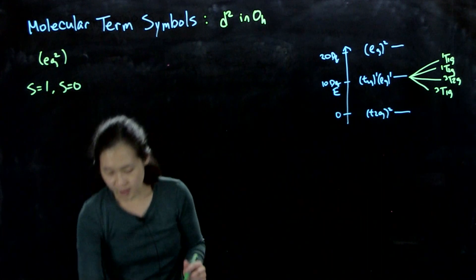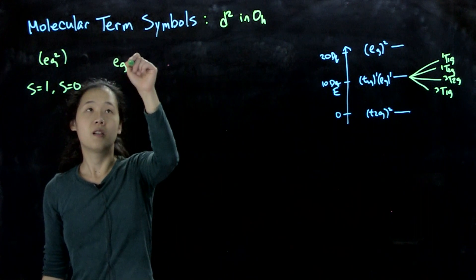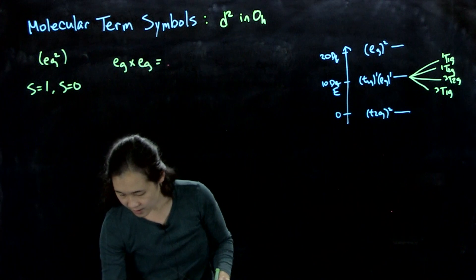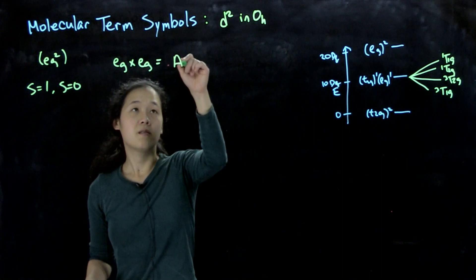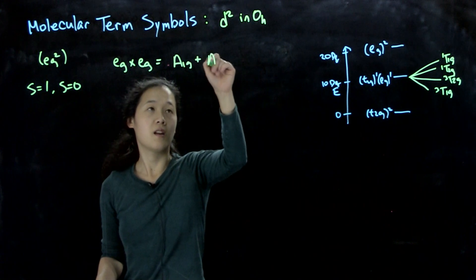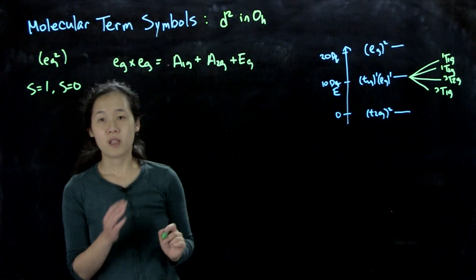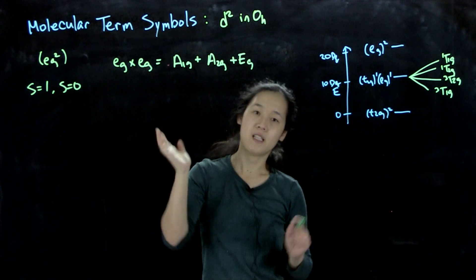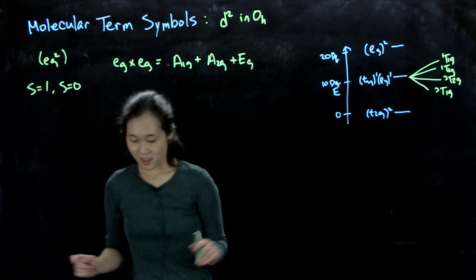To find the orbital symmetries, we again should do the direct products. So we know that eg times eg equals, let me make sure I have the right answer, it's going to be a1g plus a2g plus eg. I'm going to point out that we never get a u term because g times g is always gerade, right? Even times even is even. So don't ever get a u term, you know you're wrong.